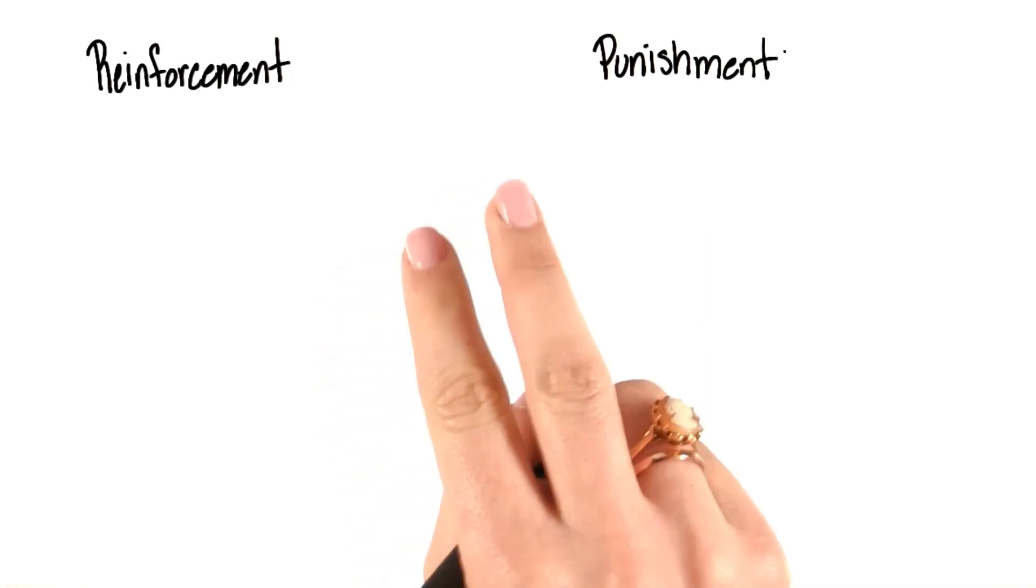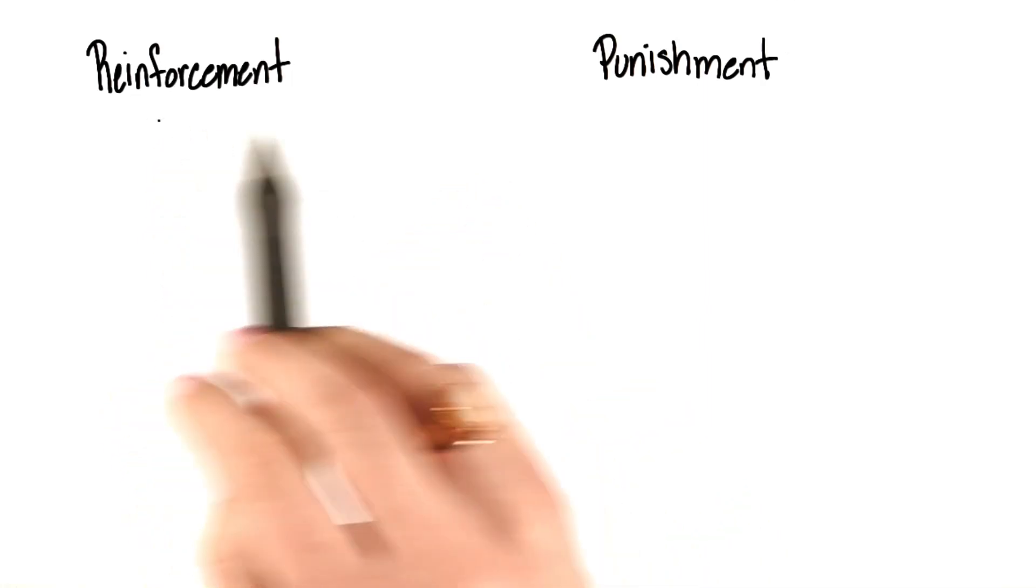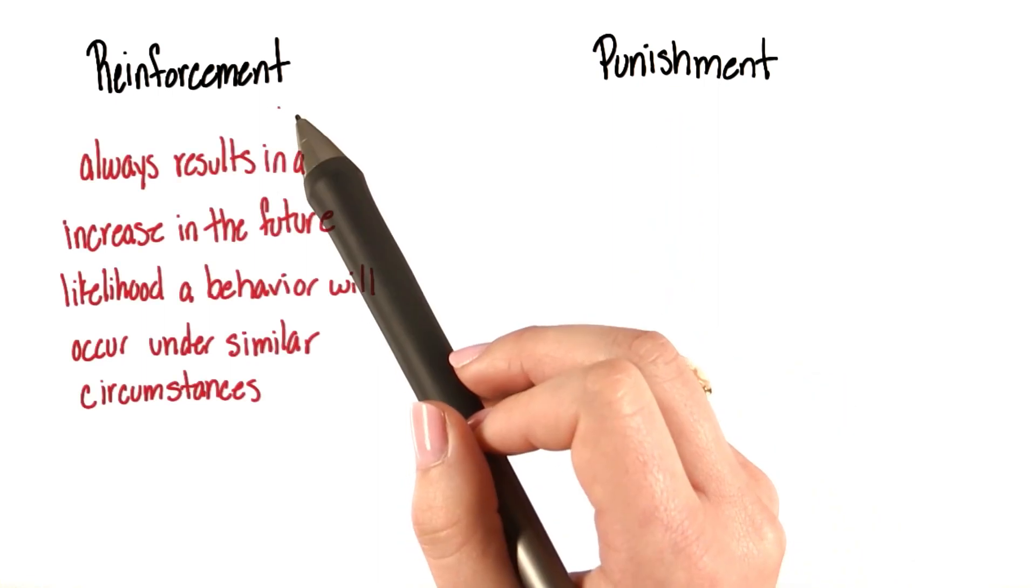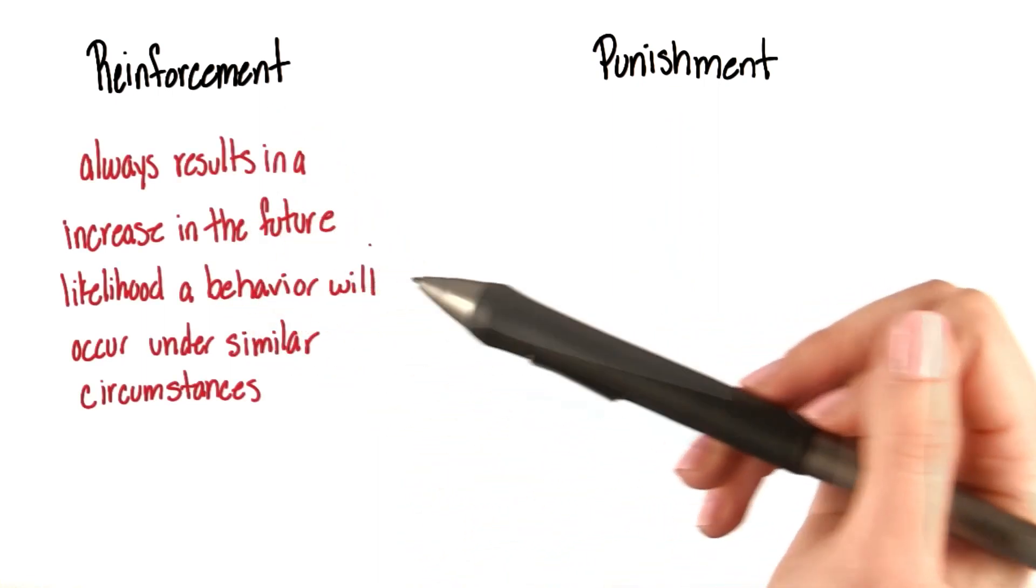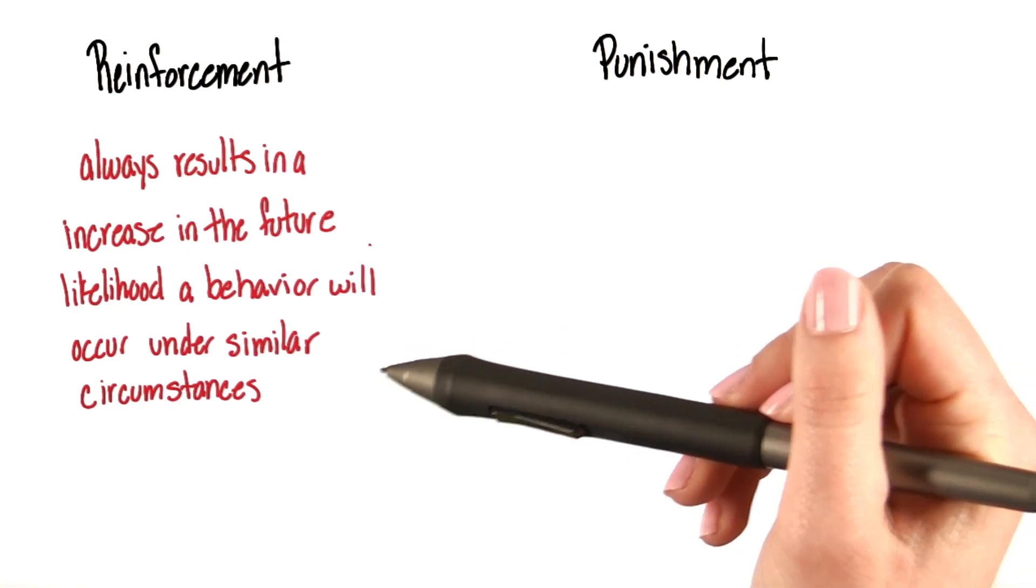There are two distinct processes that control behavior: reinforcement and punishment. A reinforcement always results in an increase in the future likelihood a behavior will occur under similar circumstances.